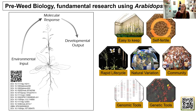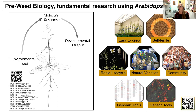Arabidopsis was great. It was easy to keep, self-fertile, had a rapid life cycle, there was plenty of natural variation, and a really big community. But most importantly, there were much better genomics and genetics tools. We're all here this week because we know the importance of developing genomics tools for non-model systems, and hopefully the work I walk through will show why having those genomic tools is important for understanding form and function.